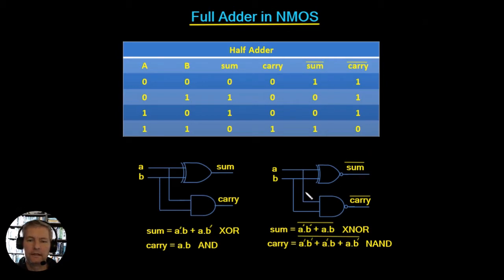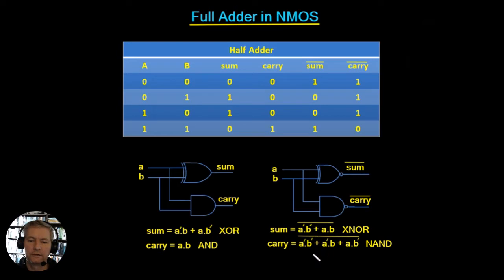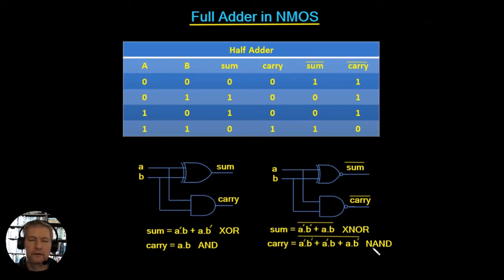The negation of the sum is given by NOT A · NOT B, OR'd with A·B — that's written with the full bar across the top. We know we can generate this output, and we can do the same for the carry bit. The carry is a NAND, and we can write the NAND function accordingly. So let's go ahead and see how we're going to implement these functions.